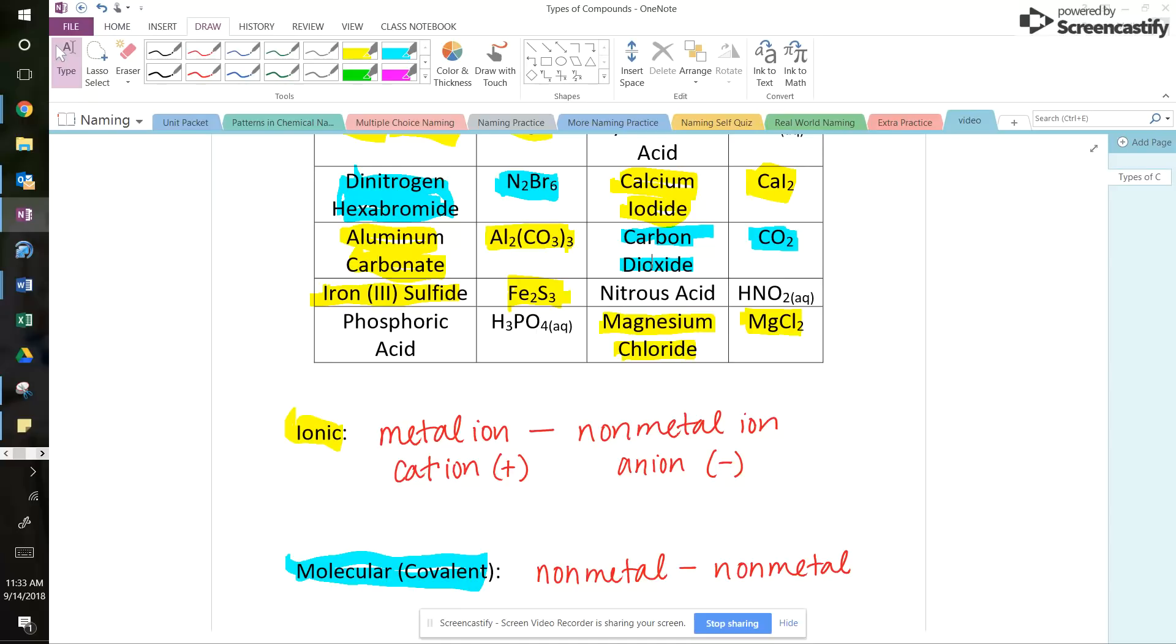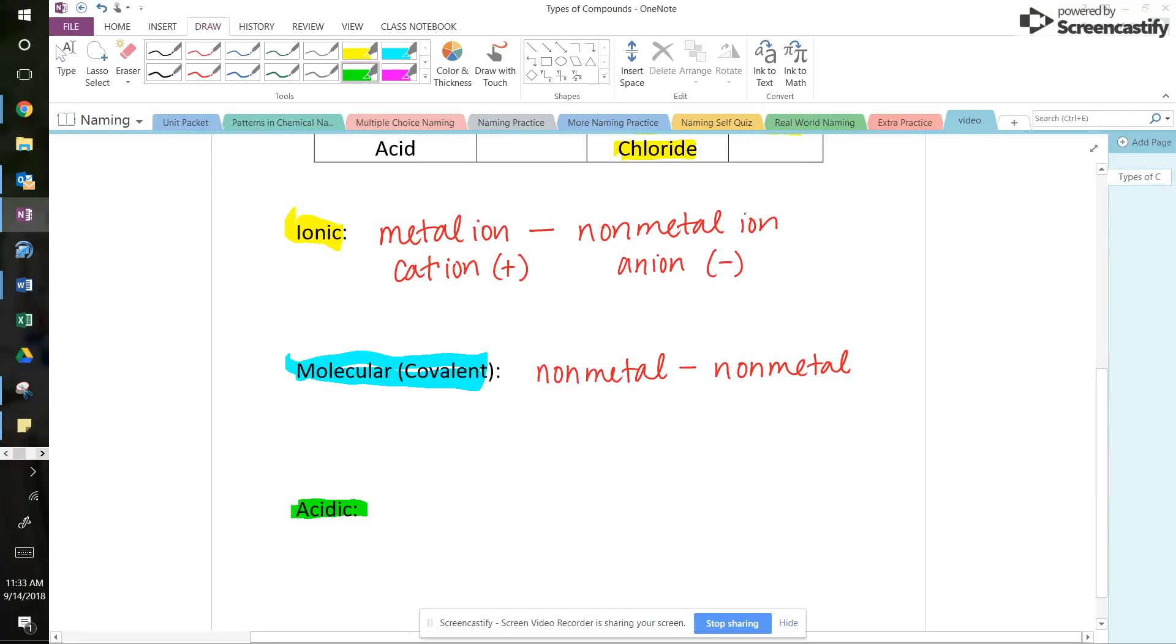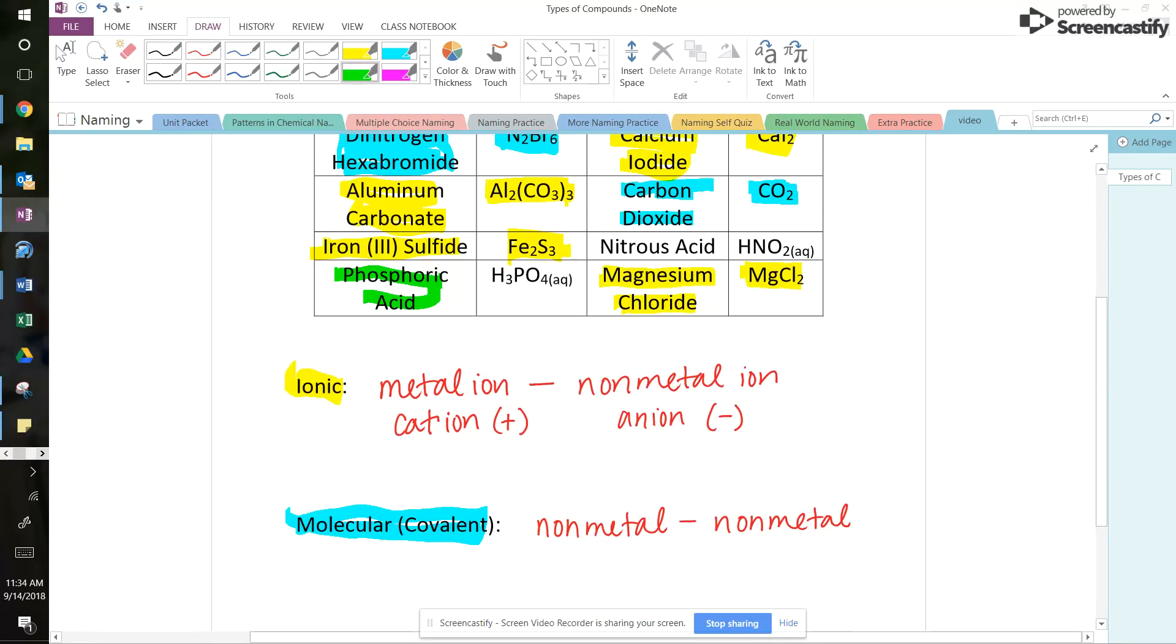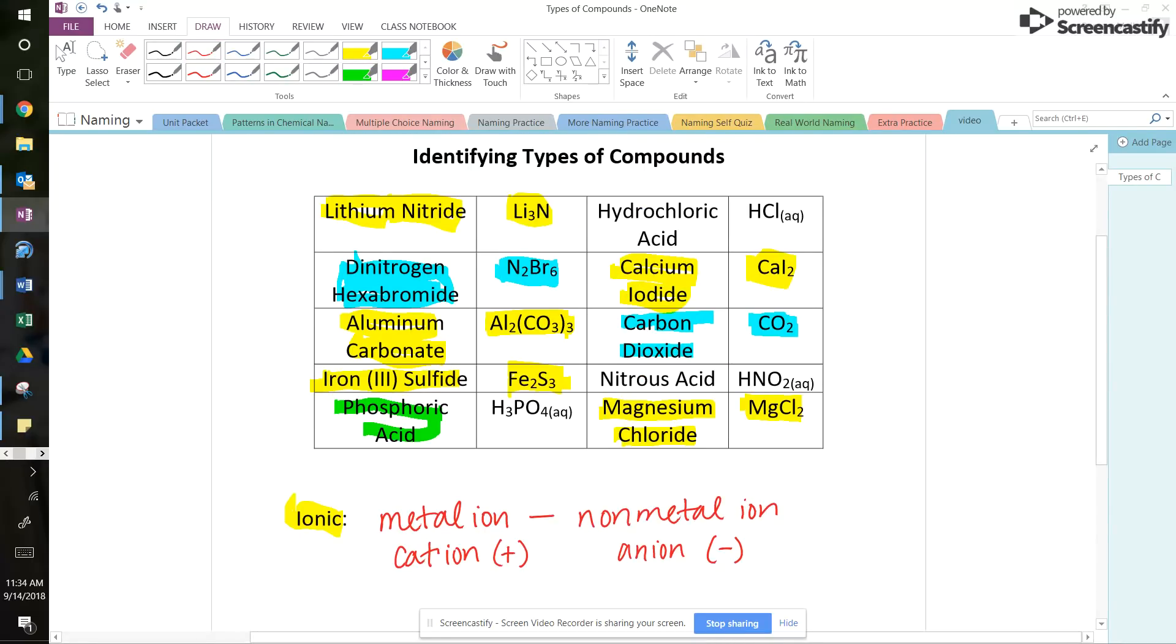And what makes an acid an acid is that it does have that hydrogen listed first. That's how you're going to tell. But you might also see it in the name that it has the word acid in it. That's easy by name. I'm going to do these really quick. I know this one's an acid and I know that one's an acid and I know that one's an acid because the name has acid.